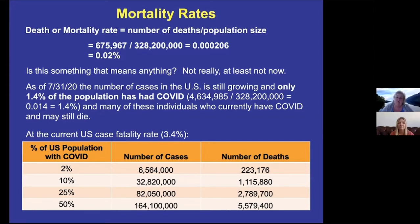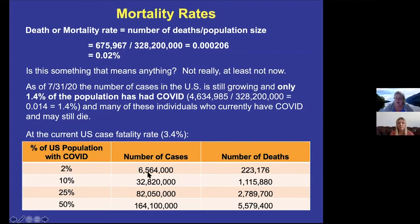Many of these are people who currently have COVID and may still die, so they haven't necessarily recovered yet. If you look at the current case fatality rate — and we talked about what that is last week — it's essentially what percent of people who have the disease actually die. In the United States, that case fatality rate is 3.4% right now. If 2% of the US population gets COVID — currently at 1.4% — that's going to be 6,564,000 cases and 223,000 deaths.